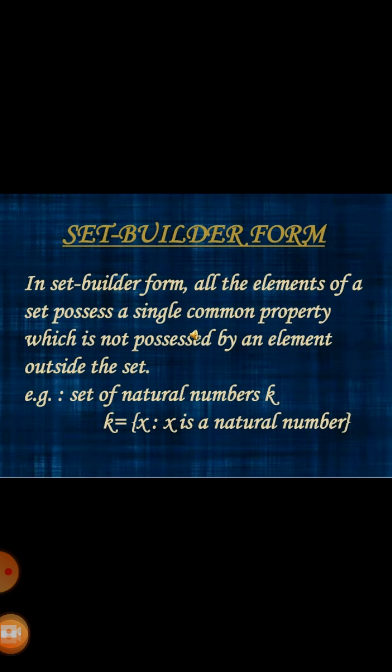Next, we have set builder form. In set builder form, all the elements of a set possess a single common property which is not possessed by any element outside the set. For example, the set of natural numbers: we represent this set with capital letter K, then we write x such that x is a natural number, enclosed in brackets.